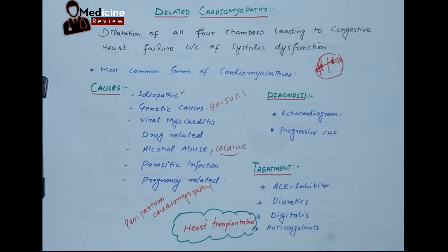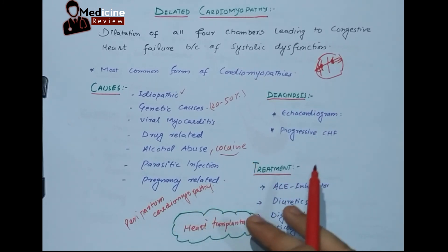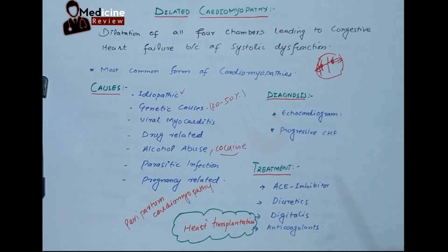Another cause is pregnancy-related, also called peripartum cardiomyopathy. Either in the late weeks of pregnancy or after a few weeks of delivery, the pregnant lady starts to develop dilated cardiomyopathy. The etiology is multifactorial — hypervolemia is involved since pregnancy is a hypervolemic condition, and gestational hypertension can also be responsible.